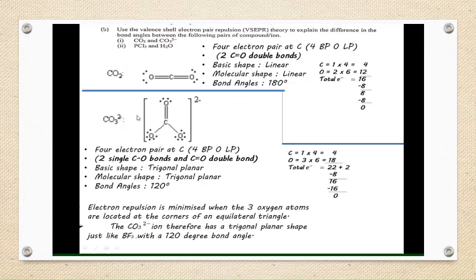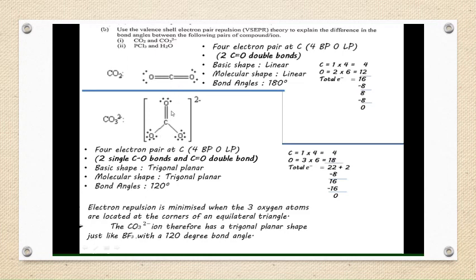For CO3²⁻, it has a charge of 2 negative, so when calculating electrons we add 2. The molecular shape is trigonal planar with a bond angle of 120 degrees. Electron repulsion is minimized when the 3 oxygen atoms are located at the corners of an equilateral triangle, giving CO3²⁻ a trigonal planar shape with a 120 degree bond angle.